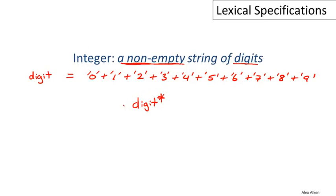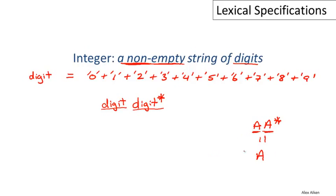That's easy to fix. We just say the whole sequence has to begin with a single digit, followed by zero or more additional digits. So there has to be at least one digit, then zero or more additional digits. This pattern is extremely common, so if I want to say I have at least one A, I write A A-star. Because this is so common, there's a shorthand supported by every regular expression processor: write A-plus. A-plus is just shorthand for A A-star. So we can simplify and write simply digit-plus.